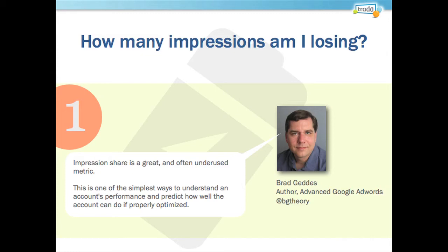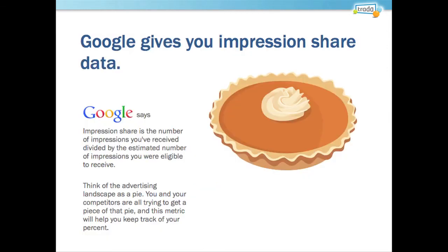His tip for us is the Impression Share Report. He says it's a great and often underused metric, and it's one of the simplest ways to understand an account's performance and predict how well the account can do if properly optimized. It can be pretty cool to identify areas of opportunity — places where you can really move the needle by making some relatively small changes.